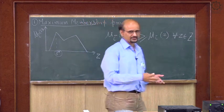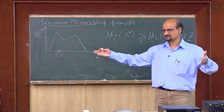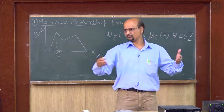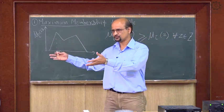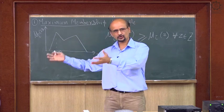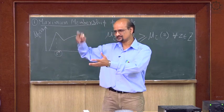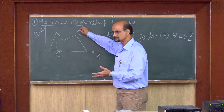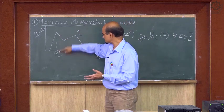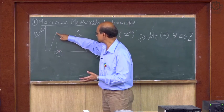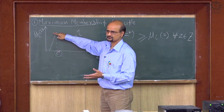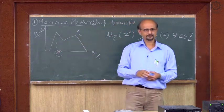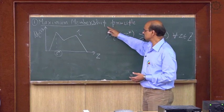Defuzzification means: I have a fuzzy set as the output. When you combine suppose 3, 4, 5 fuzzy sets you get one output accumulating all those fuzzy sets — that is your c-bar. Whatever maximum membership value corresponds to point z-star, and that is its membership value. This method is also called the height method, because you are seeing the maximum height.